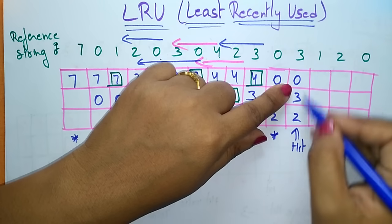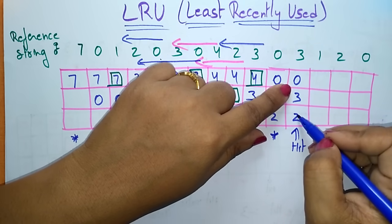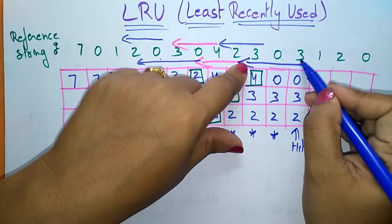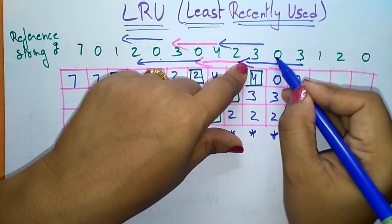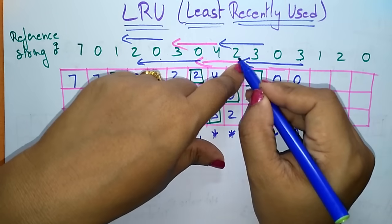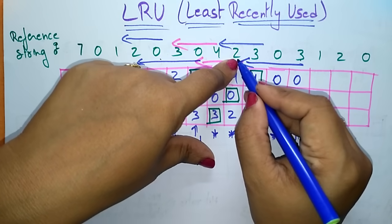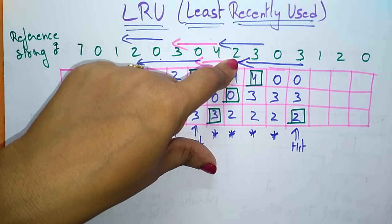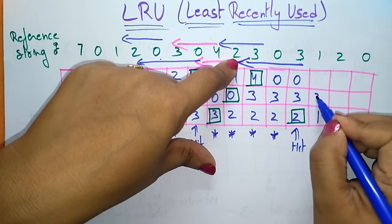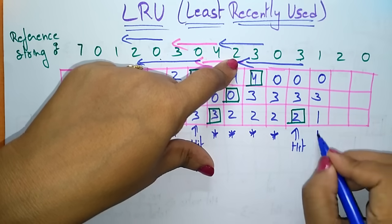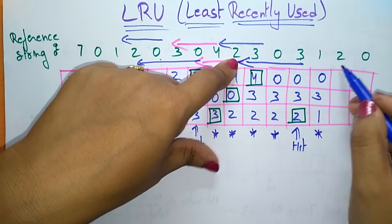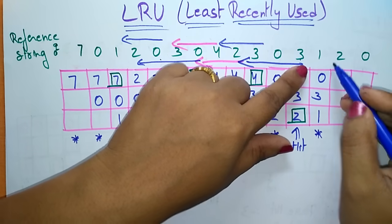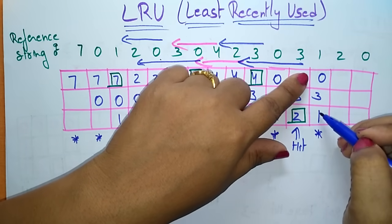Next, page 1 — 1 is not present in the main memory, so I have to replace a page. Among frames 0, 3, 2: 3 is most recently used, then 0, and 2 is the least recently used. So I replace 2 with 1, giving frames: 1, 3, 0. This is also a page fault.